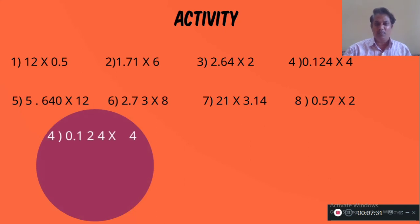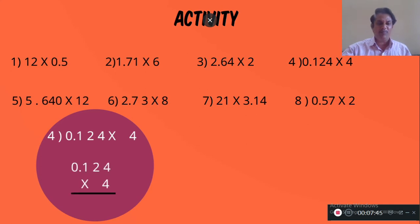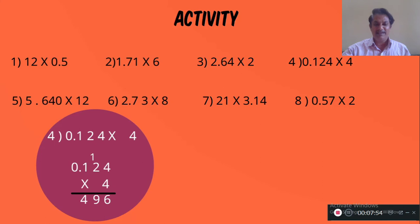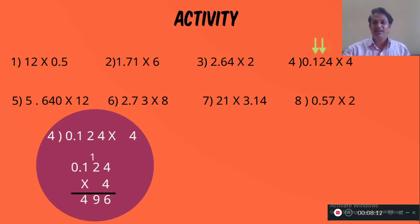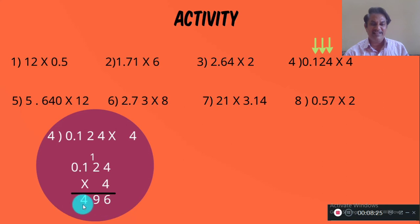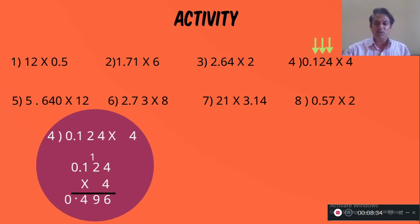0.124 into 4. First, ignore the decimal point — you get 124. So multiply 124 by 4. 4 fours are 16, 4 twos are 8 plus 1 is 9, 4 ones are 4 — so you get 496. Now, how many decimal places are in the decimal part? There are 3 decimal places. So place the point before the 4, and the integer part will be 0. So the answer is 0.496.